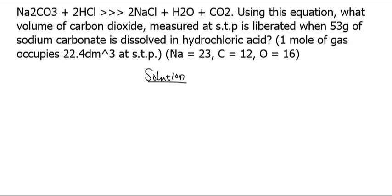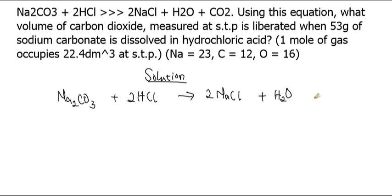We have been given a chemical equation, so let's rewrite it. We have Na2CO3 plus 2HCl giving 2NaCl plus H2O plus CO2. Looking at this equation, we can verify it is balanced: two atoms of sodium on each side, one carbon on each side, and oxygen — three on the left, one plus two on the right. Hydrogen is two on each side, and chlorine is two on each side. So this is the balanced chemical equation.